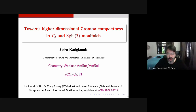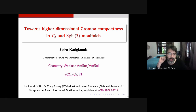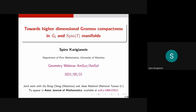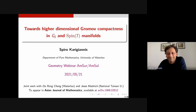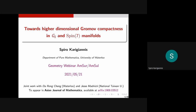The organizers of the geometry webinar welcome Spiro Karigianis from the University of Waterloo in Canada, who is telling us about higher dimensional analogs of compactness in G2 and Spin 7 manifolds. Thank you Enrique, thanks for the invitation. I'm going to talk about joint work with co-authors who I believe are both in the audience, so if there's a question I can't answer hopefully one of them can.